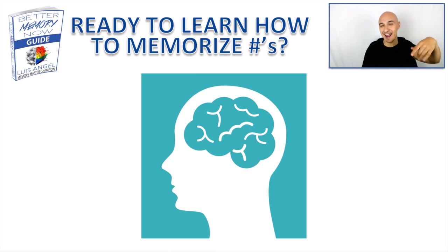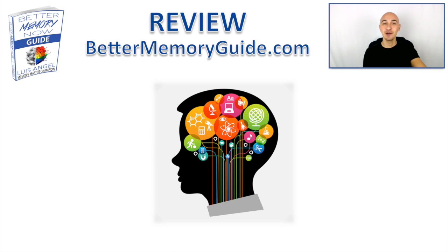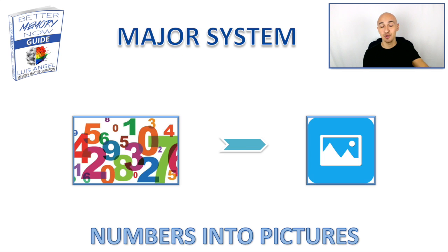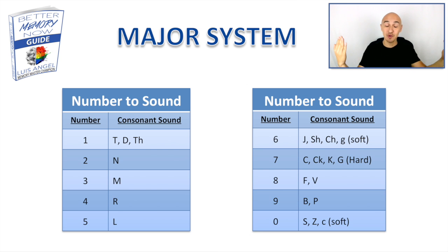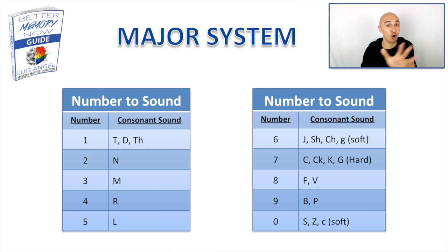Are you ready to learn how to memorize single digit numbers? To continue on with the review of how we get started, let's talk about the major system. You use the major system to memorize numbers. These are the consonant sounds you want to associate to each number. If you haven't watched that video, go ahead and watch it below where I walk you through the whole major system process.